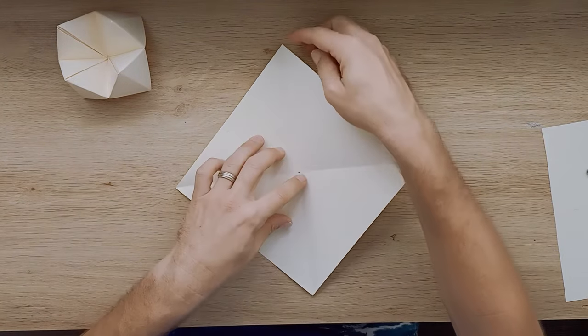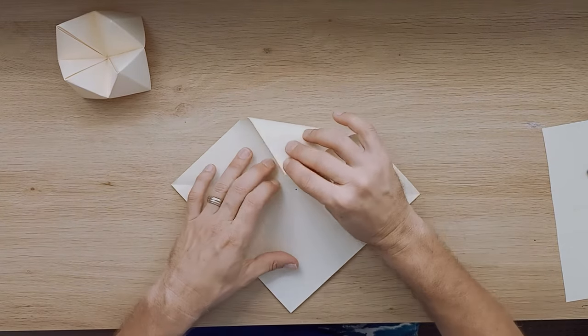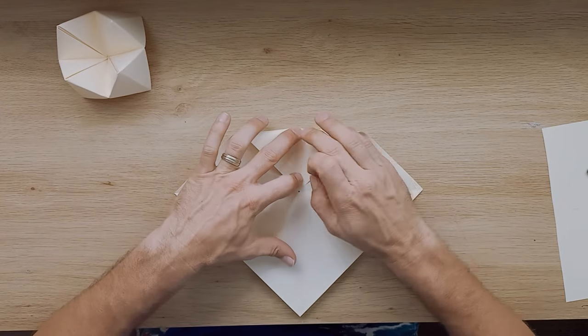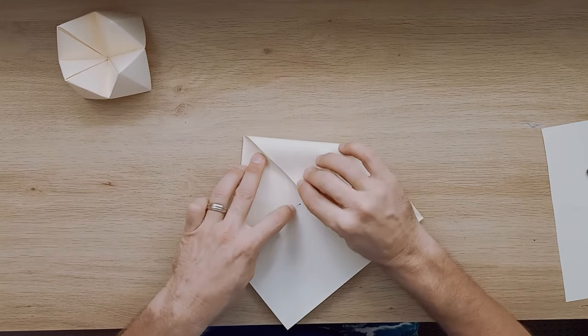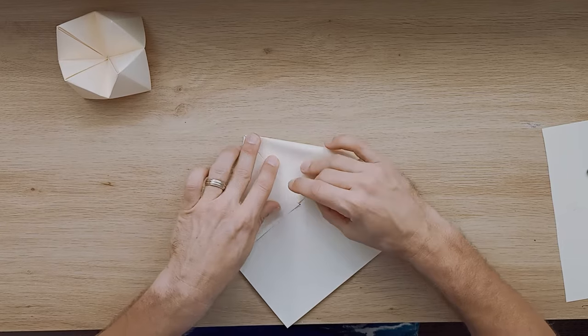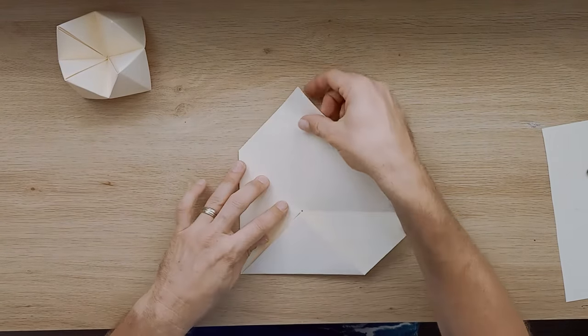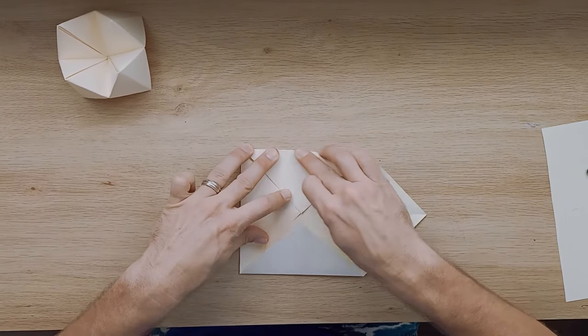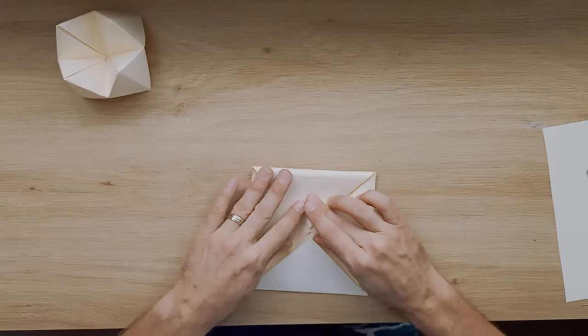Now I have to bring every one of these points to meet the center point. So I grab that, bring it down to my little center point and make a nice neat fold. Turn it around, bring the next one down to my center point and make a nice neat fold. Bring my third one down to make a nice fold, and my last one comes down as well to make a nice fold.